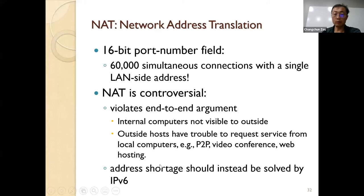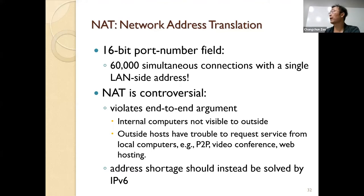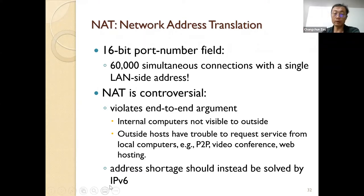Address shortage was supposed to be solved by IPv6 — that was the original design for IPv6. But because NAT was so successful, people found that once we use NAT, we don't need to worry about IP address resource shortage anymore. That's why IPv6 has been very slow in adoption by the internet.